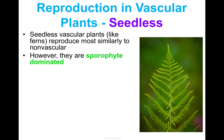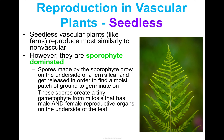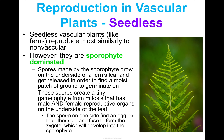Ferns are most similar to non-vascular plants; however, a big difference is that they are sporophyte dominated, spending a lot of their life cycle in that sporophyte stage. Spores made by the sporophyte via meiosis grow on the underside of the fern's leaf, then get released to find a moist patch of ground to germinate on in order to produce tiny gametophytes. These gametophytes have male and female reproductive organs; sperm on one side find an egg on the other side, fuse during fertilization, and the zygote develops back into the sporophyte.